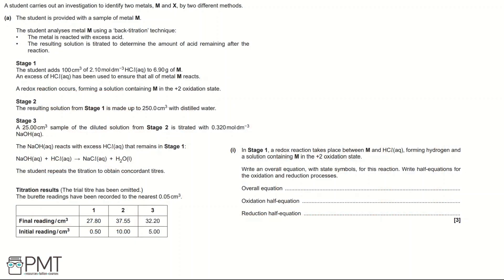A student carries out an investigation to identify two metals M and X by two different methods. In Part A, the student is provided with a sample of metal M and analyses it using a back titration technique. The metal is reacted with excess acid, and the resulting solution is titrated to determine the amount of acid remaining after the reaction.